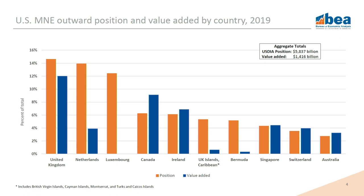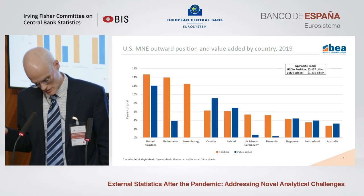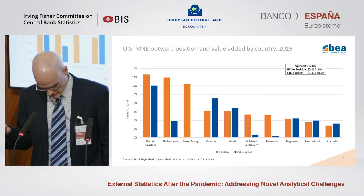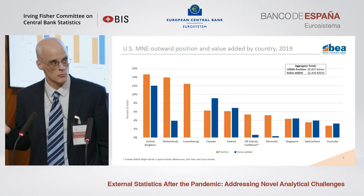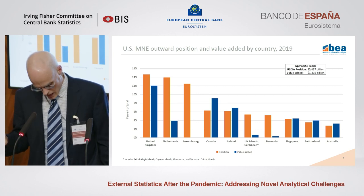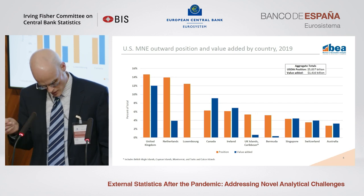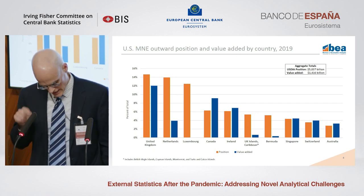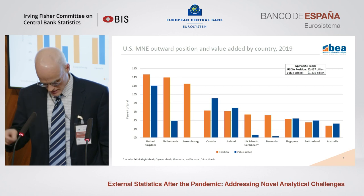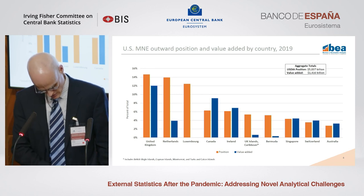Countries like Luxembourg, the Netherlands, UK islands in the Caribbean, and Bermuda all have significant position but low value added, indicating that investments are passing on to affiliates in other countries. One reason may be to take advantage of more favorable tax structures. For all countries where the orange bar is higher than the blue bar, with the exception of the U.K., the national corporate tax rate is below the OECD average.